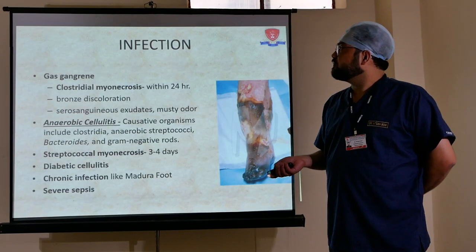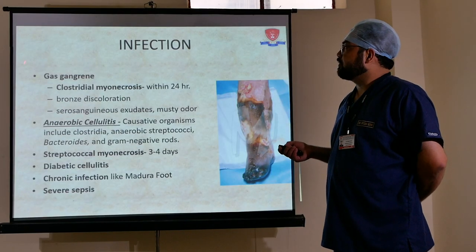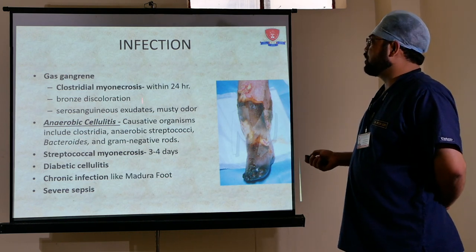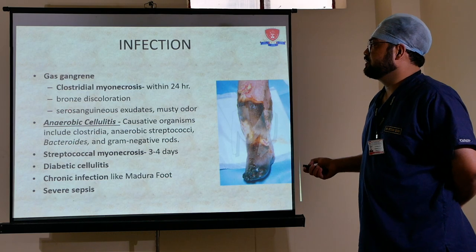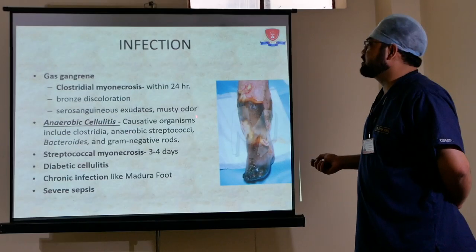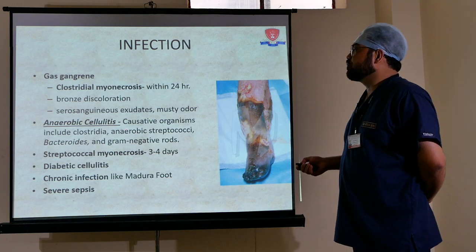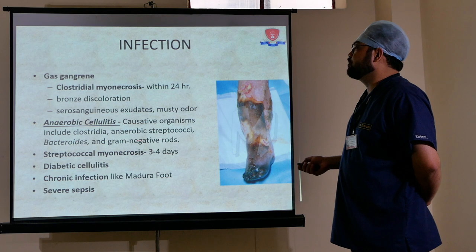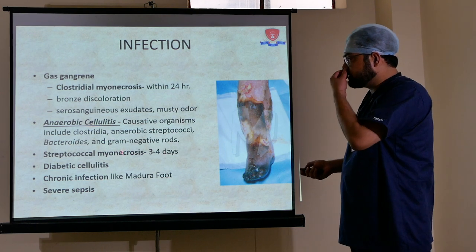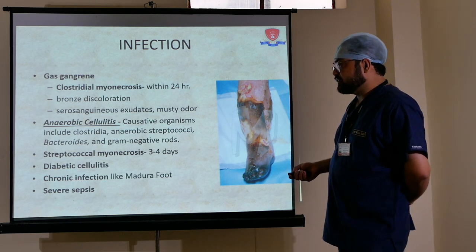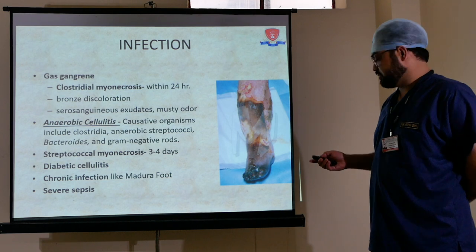Infection indications include: first, gas gangrene caused by Clostridium myonecrosis — within 24 hours there is bronze discoloration, serosanguinous exudate, and a musty odor. Second, anaerobic cellulitis — causative organisms include Clostridia, anaerobic streptococci, bacteroids, and gram-negative rods. Third, streptococcal myonecrosis occurring three to four days after injury. Also diabetic cellulitis, chronic infections like Madura foot, and severe sepsis.